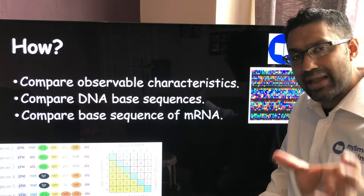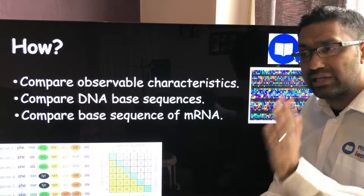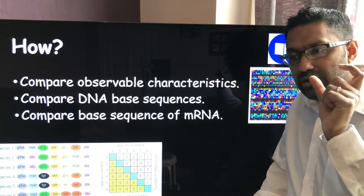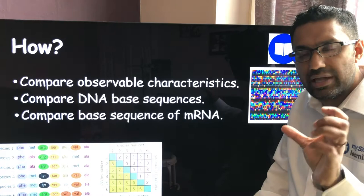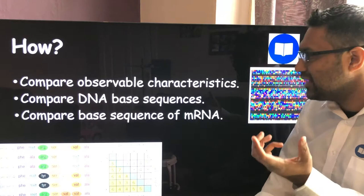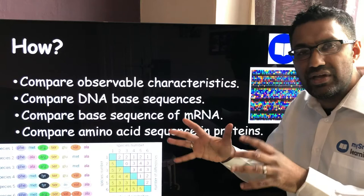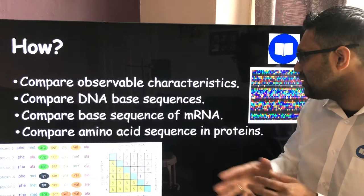mRNA is a template made from your DNA sequence. It's not the entire DNA sequence — your entire DNA sequence gives you your whole genome, which you can compare between species. The mRNA base sequence gives you a smaller section, but an mRNA strand codes for a polypeptide, and therefore a protein. So what you're really doing is comparing the amino acid sequences in proteins. If the base sequence of mRNA is the same between two organisms, they have the same proteins, and that provides a comparison of how closely related they are.